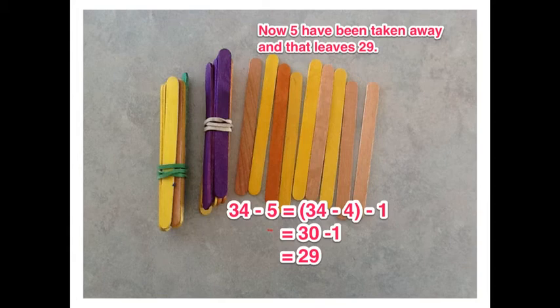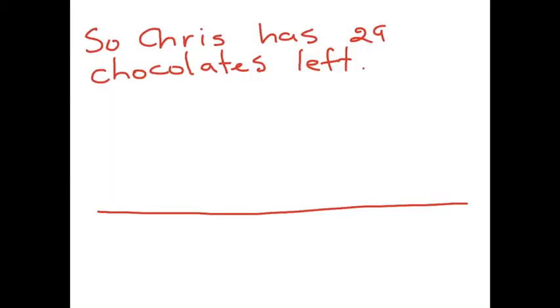I split that 5 into 4 and 1. I took away the 4 first and that left me with 30 and 1 more to take away. I took that away and I found I was left with 29. So Chris has 29 chocolates left.